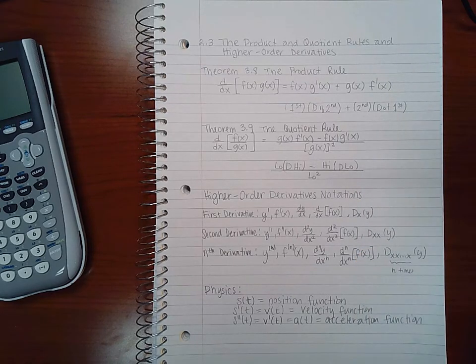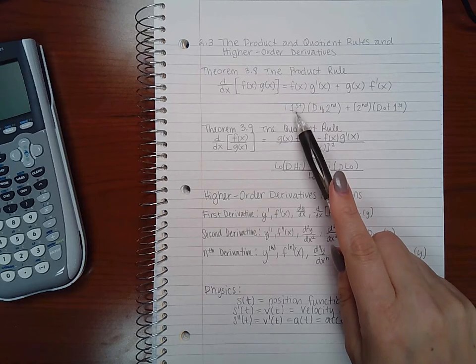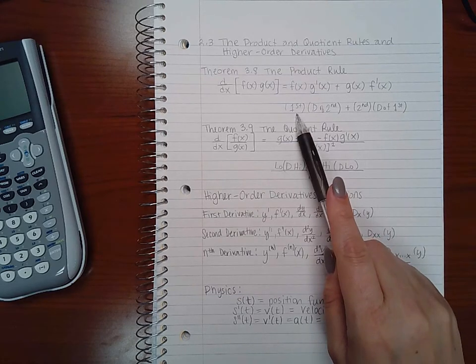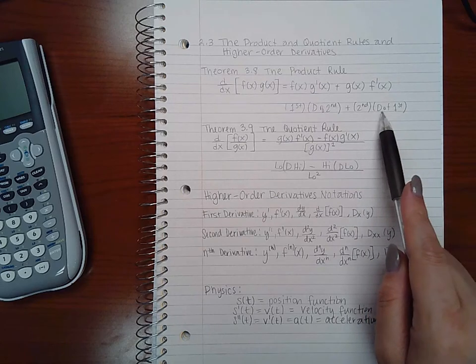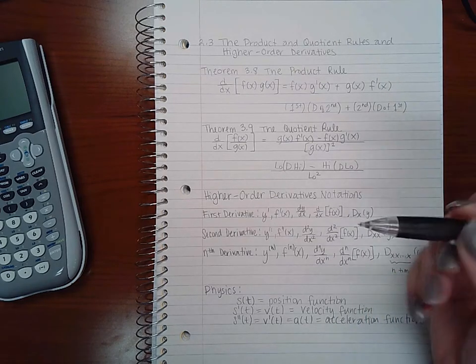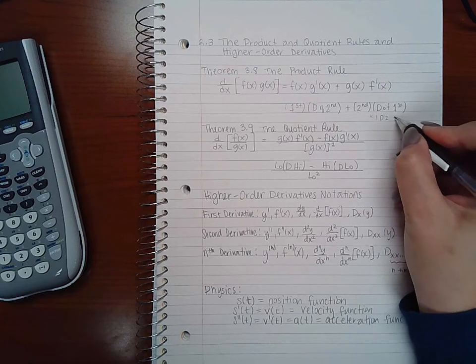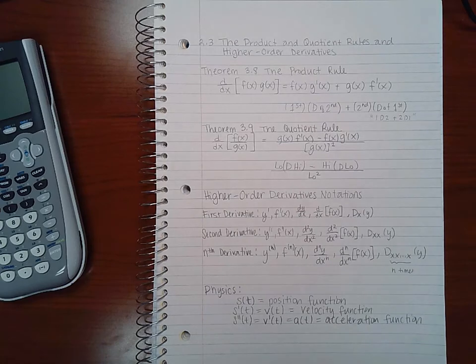Now a mnemonic that I come up with to help me remember this is 1d2 plus 2d1, and what it means is the first factor times the derivative of the second, the second factor times the derivative of the first. But that's usually always what I say in my head, 1d2 plus 2d1. That's what I'm saying in my head to help me remember the order.